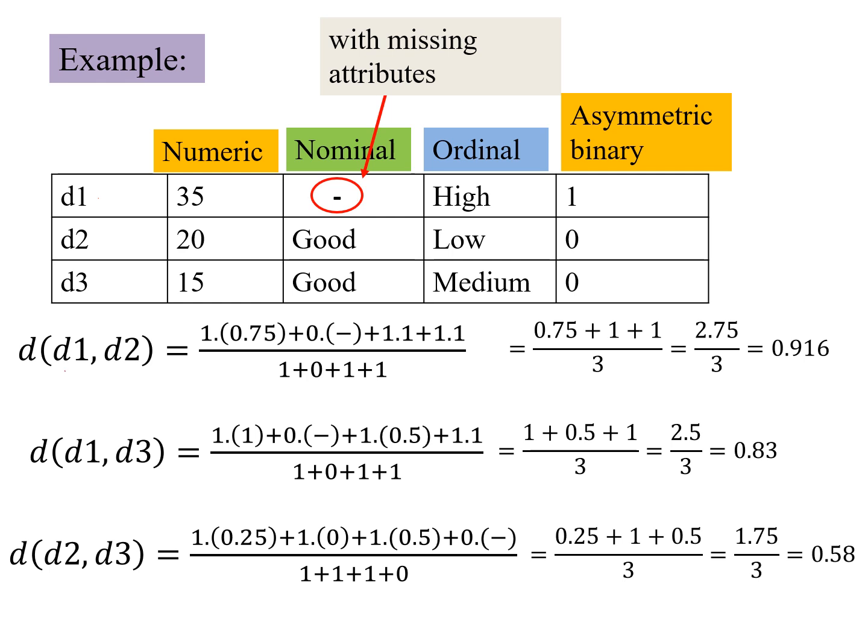So when we compute the distance between D1 and D2, so this delta would be 0. So we look at our distance formulation, which we had written earlier, that this is the delta, the delta, for the first attribute, this one, for these two. So here this is 1. So this delta is 1. But this delta value is 0, because of the missing attribute. So we put a 0 here. And here again it is 1.